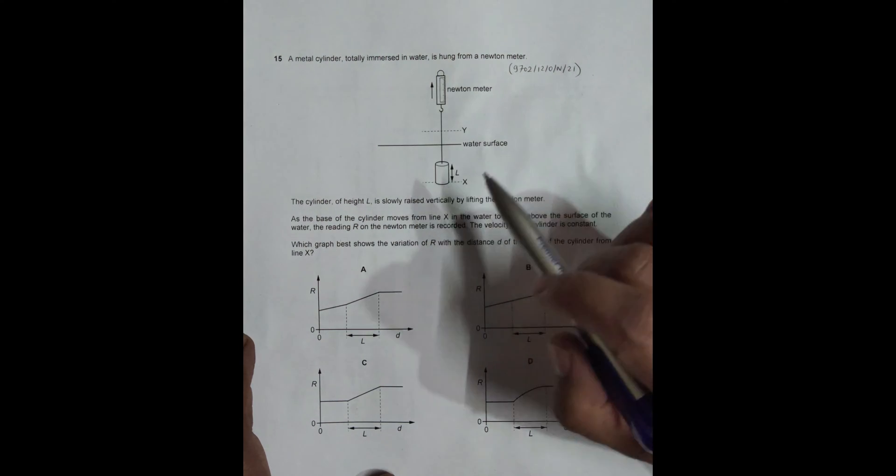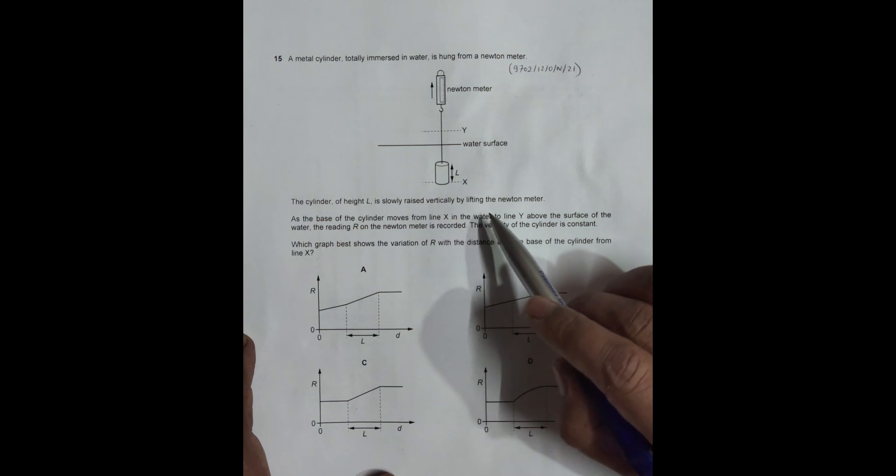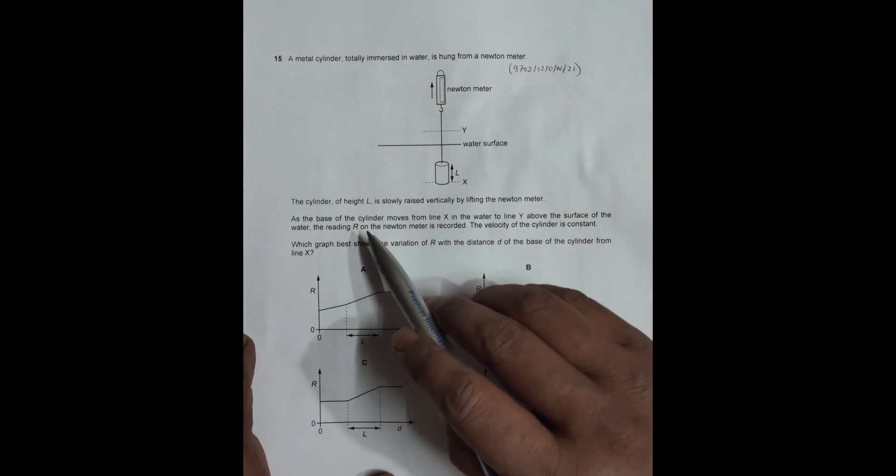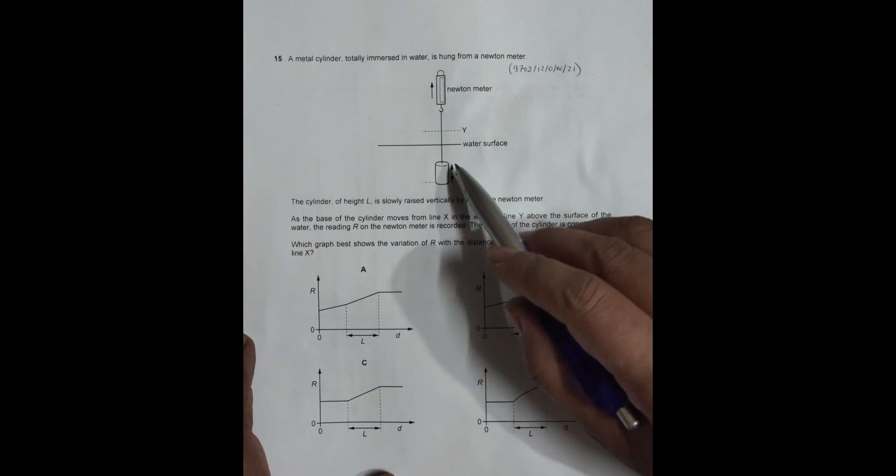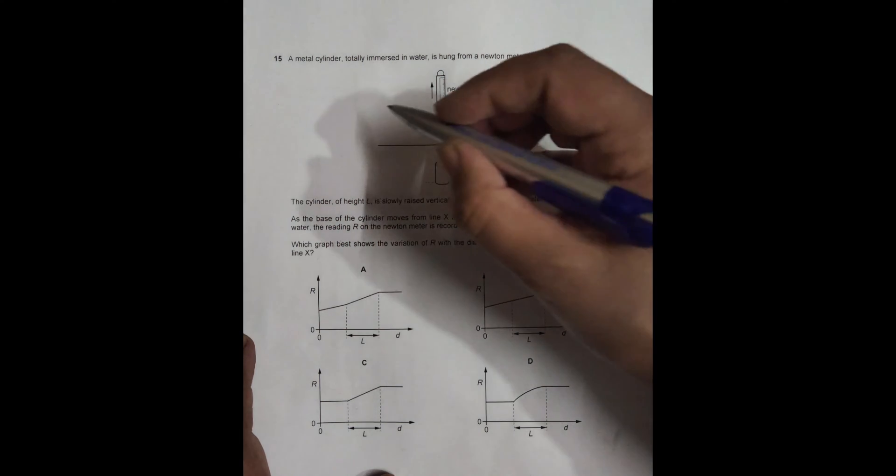A cylinder of height L is slowly raised vertically by lifting the Newton meter. So we lift it, it also rises as the base of the cylinder moves from line X in the water to line Y at the surface of the water.